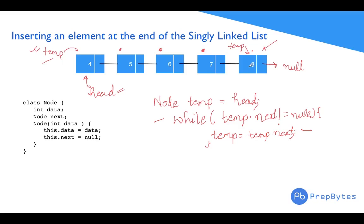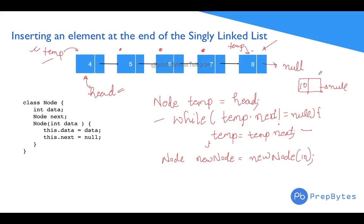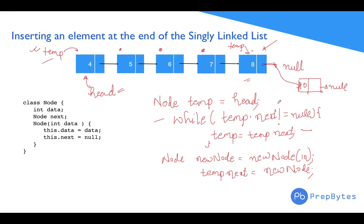Now we create a new node — let's say we want to insert data 10. A new node is created somewhere in memory with data 10 and next as null. Then we update the last node's next to point to this new node by doing temp.next = newNode. Now the linked list has one more node appended at the end.